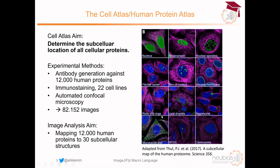The images we are working with are from the cell atlas, the Human Protein Atlas. The aim of this project was to determine for each cell protein where in the cell it is localized. They generated antibodies against 12,000 human proteins and did immunostainings using 22 cell lines. After automatic confocal microscopy, this resulted in 82,000 images. The images have three channels: nuclei in blue, microtubules in magenta, and the protein of interest labeled in green.